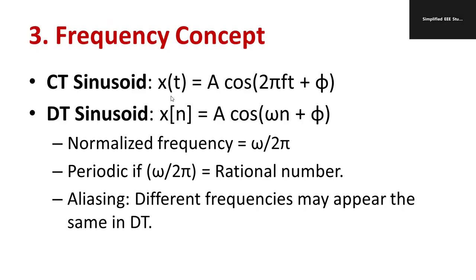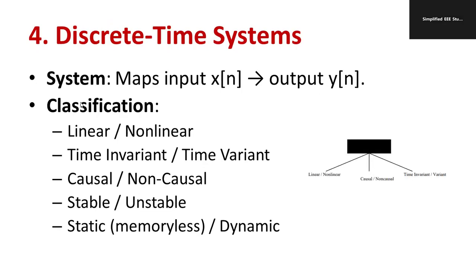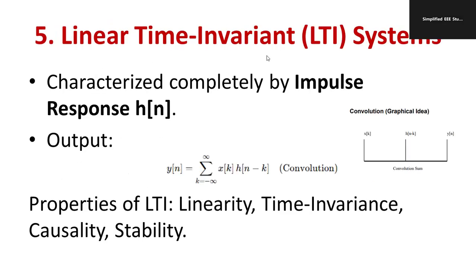A discrete time system maps input x(n) to output y(n). The classifications of discrete time systems include: linear or non-linear, time invariant or time variant, causal or non-causal, stable or unstable, and static or dynamic. A linear time invariant (LTI) system is completely characterized by its impulse response h(n).